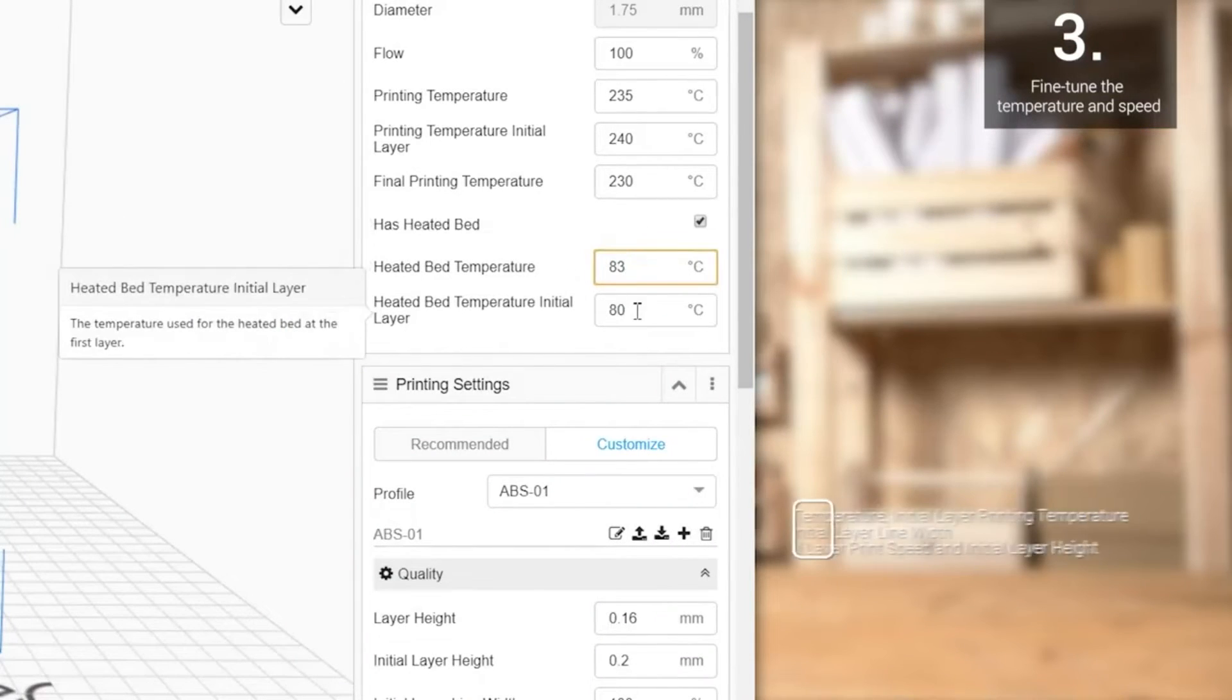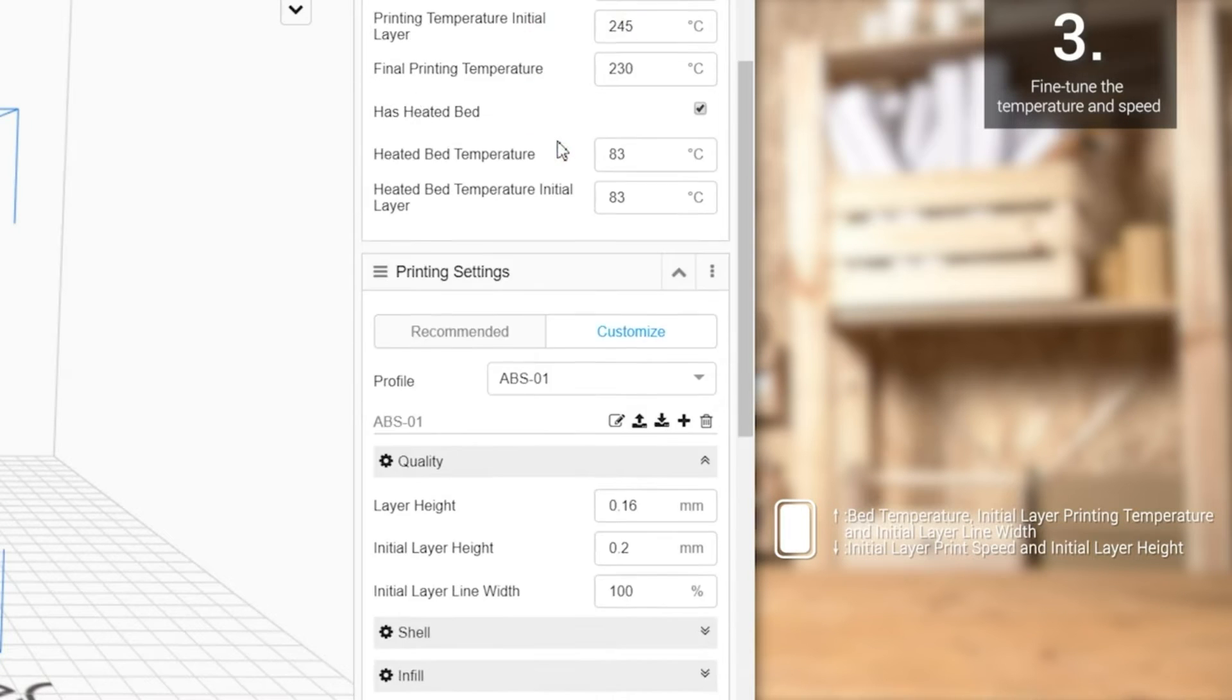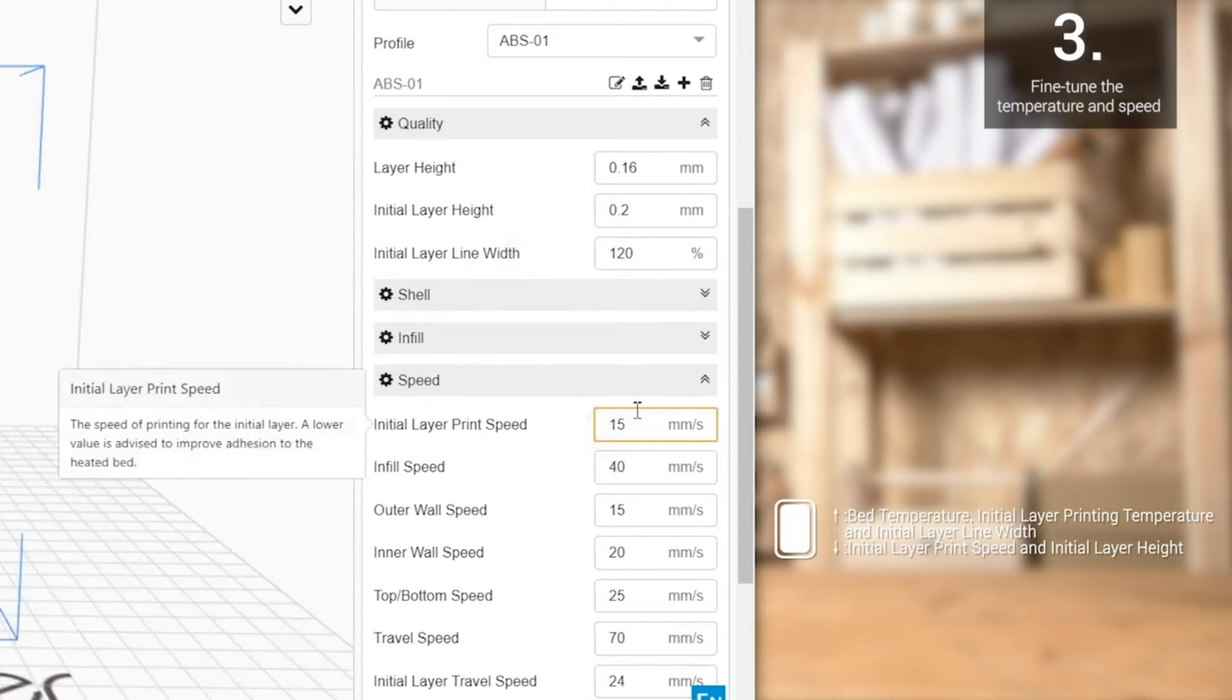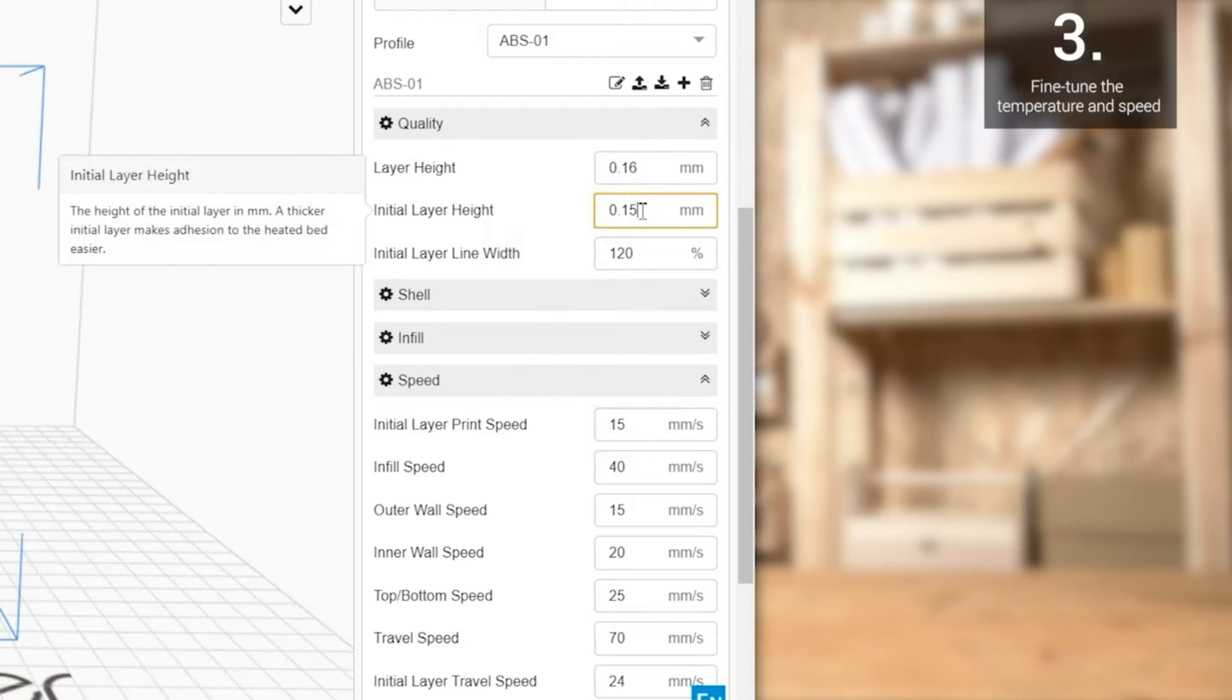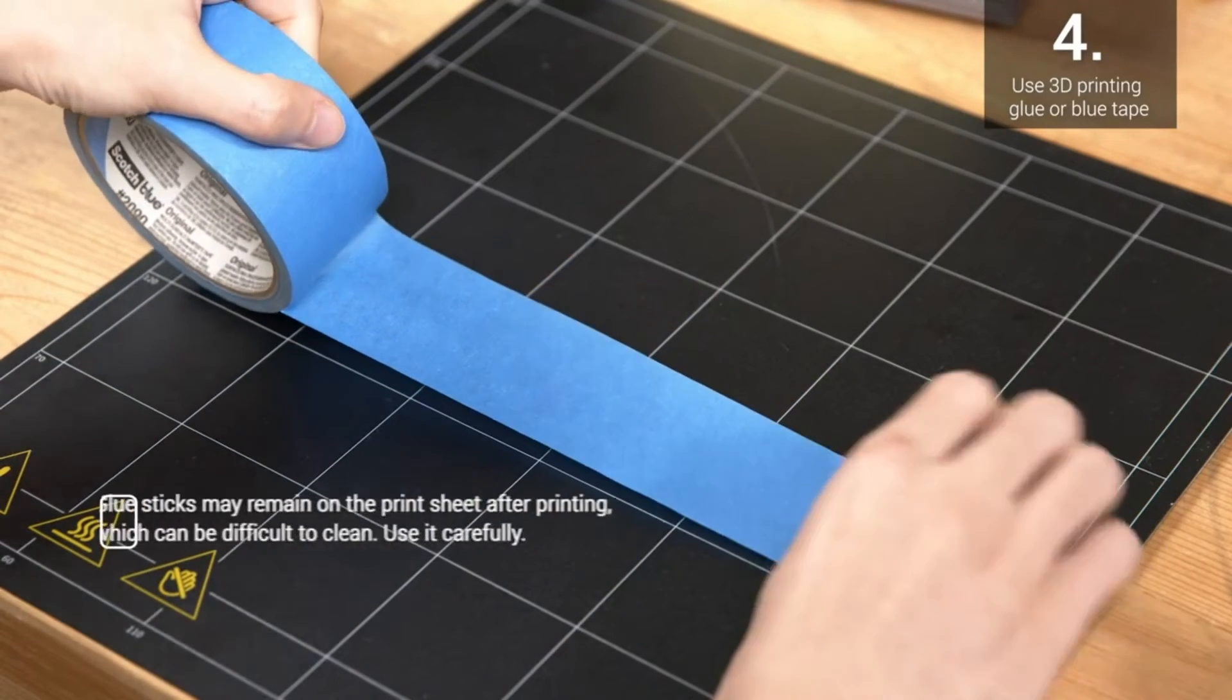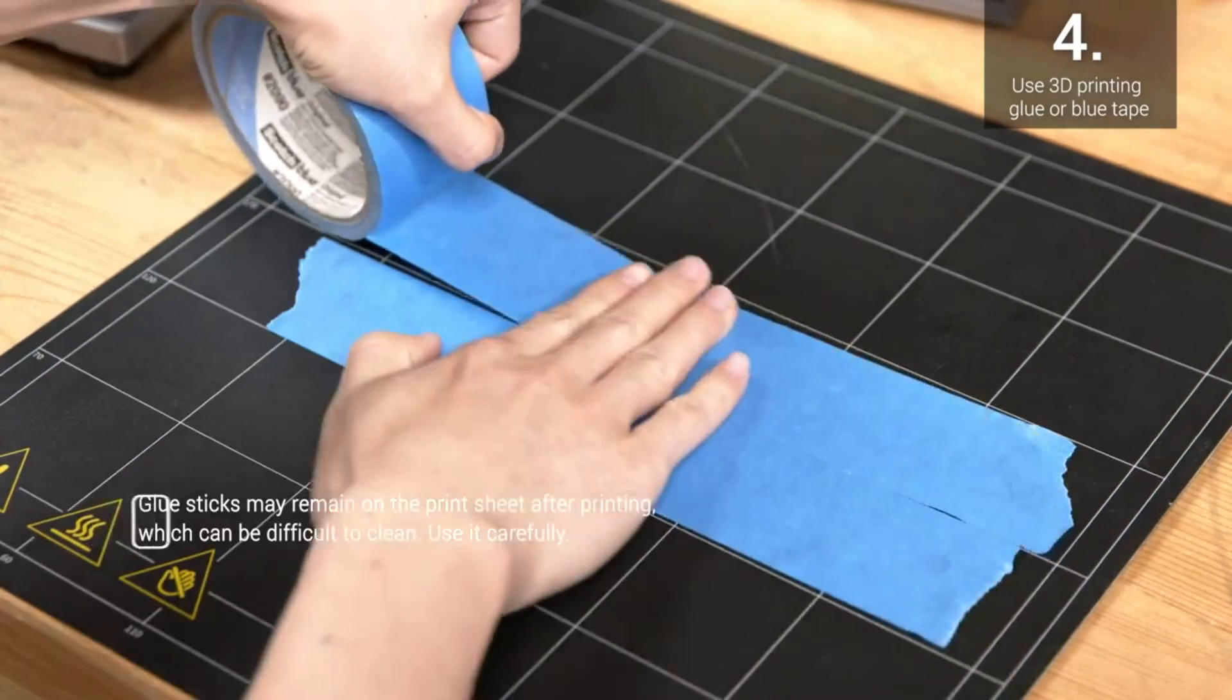Third, fine-tune the temperature and speed parameters to achieve better first layer adhesion. This includes turning up the bed temperature, initial layer printing temperature, and initial layer line width, as well as turning down the initial layer print speed and initial layer height. Fourth, apply some 3D printing glue or blue tape to your heated bed and then print on them. They can help with adhesion too.